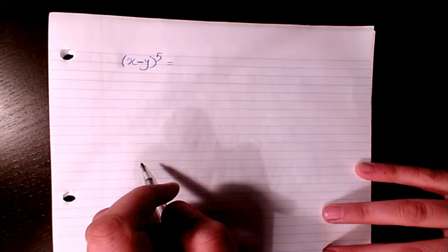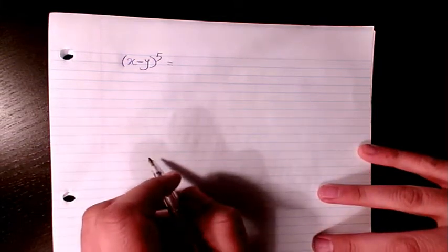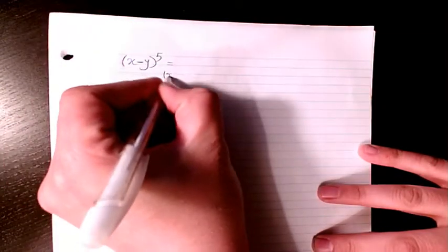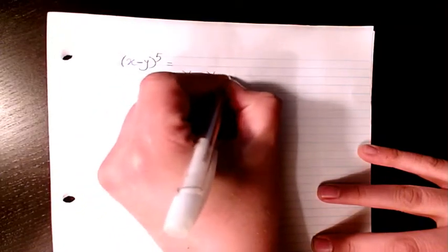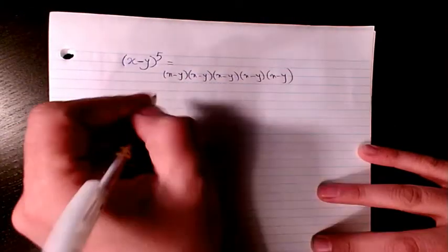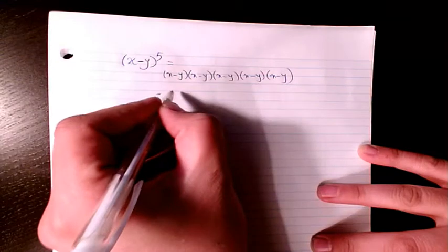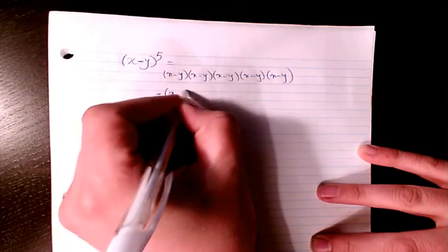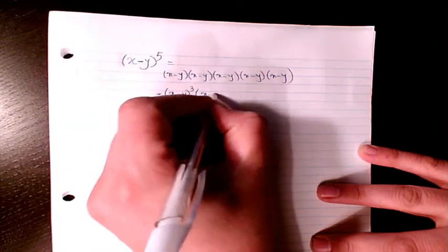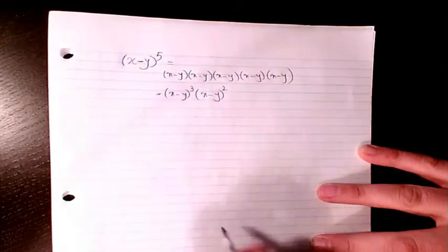In this video I want to talk about (x minus y) to the power of 5. I want to show you how to expand this formula. We have different options: one option is to have (x minus y) times (x minus y) times (x minus y) times (x minus y) times (x minus y) and multiply them all together, or you can write it in a simpler form like (x minus y) cubed times (x minus y) squared.